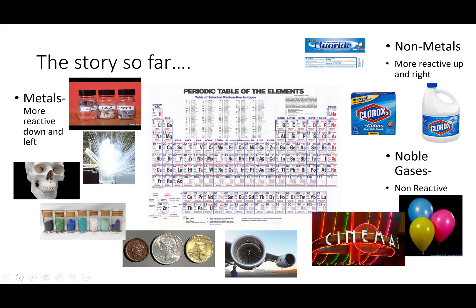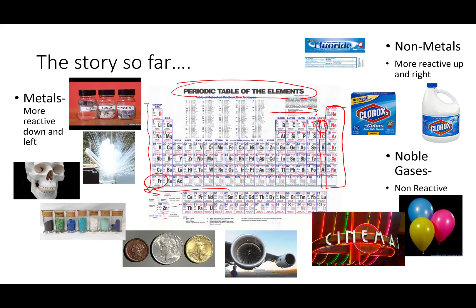Here's the story so far. We've been talking about the periodic table and we have been talking about trends along that periodic table. Metals get more reactive as you go down and to the left, and non-metals get more reactive as you go up and to the right. So we end up with the most reactive non-metal as fluorine, the most reactive metal as francium. And then there's this group of noble gases that have almost no reactions.